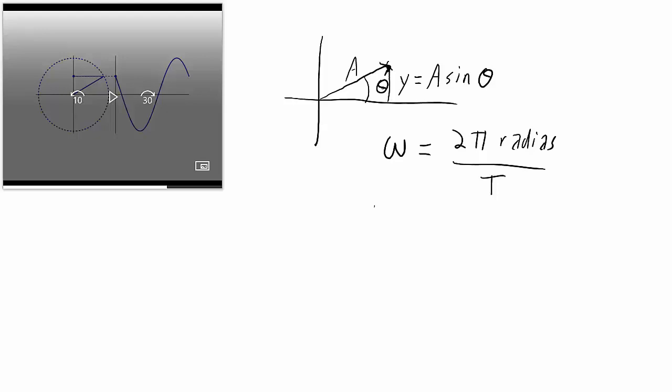And then we know, assuming that theta starts at time t equals zero, theta is equal to zero, the angle at any point in time is going to be the angular velocity times the time. And that's going to be measured in radians.